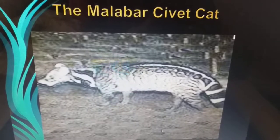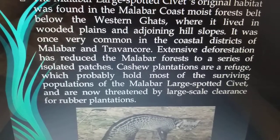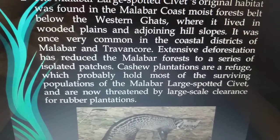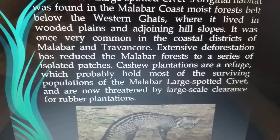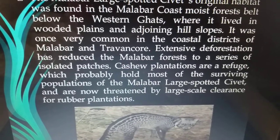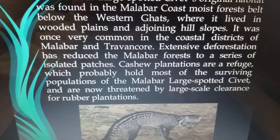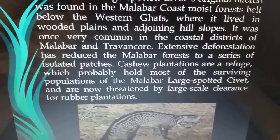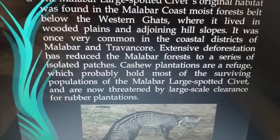Next is the Malabar civet cat. The Malabar large-spotted civet's original habitat was found on the Malabar coast, in moist forest below the Western Ghats, where it lived in wooded plains and adjoining hilly slopes. It was once very common in the coastal districts of Malabar and Travancore. Extensive deforestation has reduced the Malabar forest to isolated patches, and the civet is now threatened by large-scale clearance of rubber plantations.